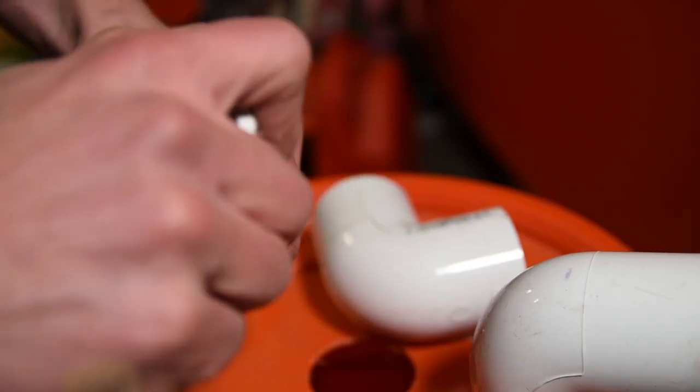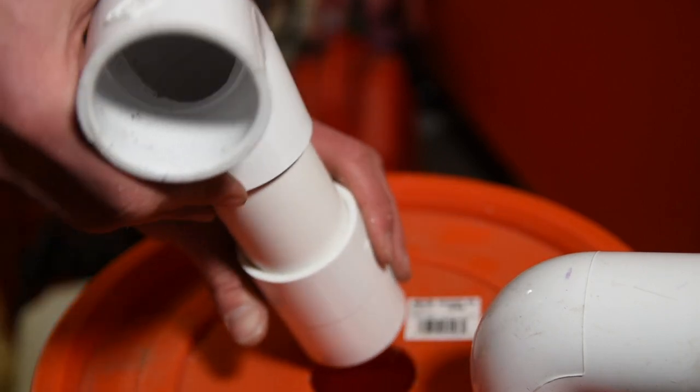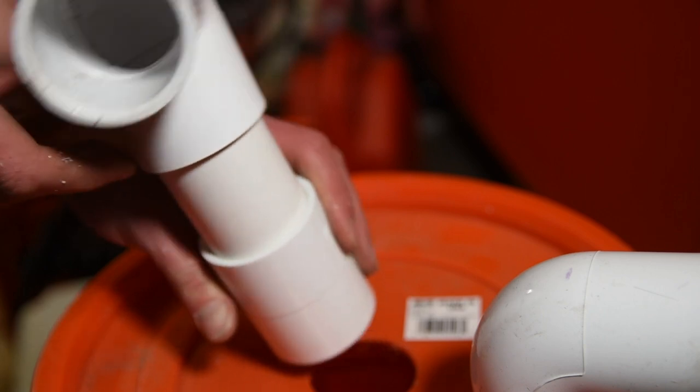Insert the pipe into the coupler and then into the 90-degree elbow that will go on the other end of the pipe. That's how the pieces will go together with the bucket lid in between.